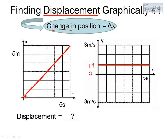The easiest way is to look at the position graph. If we look at the beginning, it starts at a position of zero meters, and it finishes after a total of six seconds. Its final position is six meters. So the change in position is six — it moved up six meters, not down six meters. The overall displacement, looking at the position graph, is positive six meters.